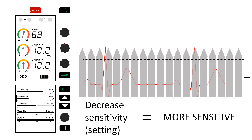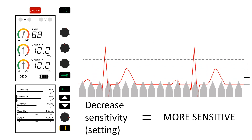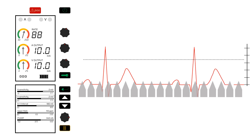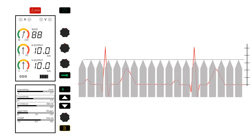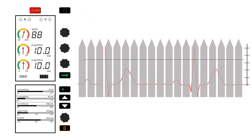If we decrease the sensitivity setting, the height of the fence decreases and the pacemaker is able to see more. This makes the pacemaker more sensitive and can lead to over-sensing. Here the ventricular lead also senses the smaller changes in voltage of the P and T waves. Remember that over-sensing means the heart is picking up any small change in voltage and interpreting it as cardiac activity, and this means the pacemaker won't pace even when it needs to. Let's see that again — keep an eye on the sensing lights.